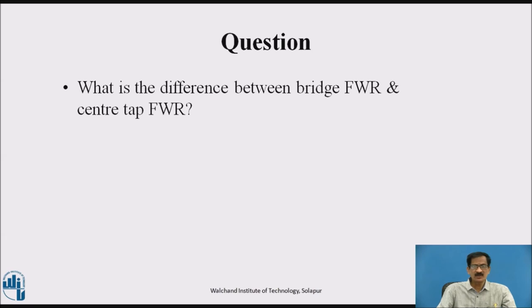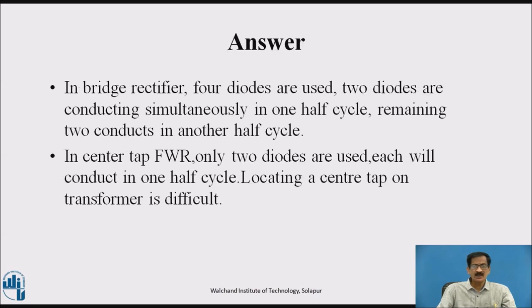Question: what is the difference between the bridge full wave rectifier and the center tap? In bridge rectifier, four diodes are used, two diodes are conducting simultaneously in one half cycle, remaining two conducting in another half cycle. In center tap, two diodes are used, each will conduct in one half cycle. Locating a center tap on transformers is difficult.